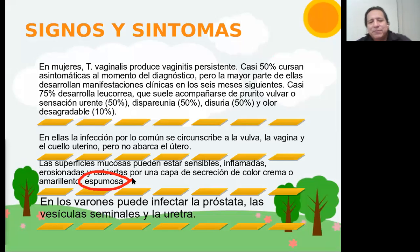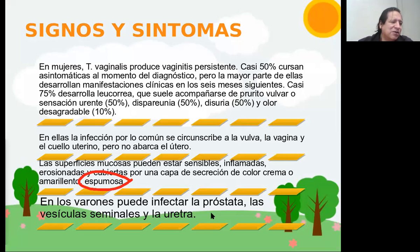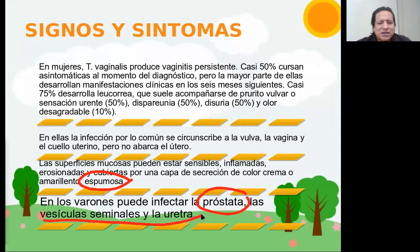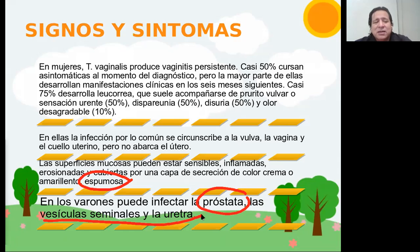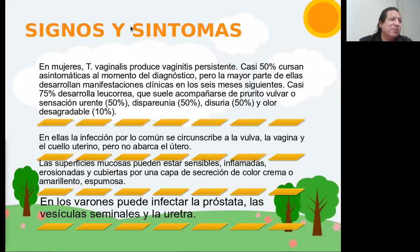Ahora, en cuanto al hombre, la mayoría es asintomática — ni están enterados de que tienen el parásito. En algunos, se pudiera ubicar en la próstata, vesículas seminales y uretra. En esos casos, puede tener sintomatología muy inespecífica, como ardor, dolor al orinar, generalmente leve. Suele ser muy suave y durar poco tiempo, de tal manera que puede que el paciente, a pesar de tener sintomatología, como es leve, no acuda al médico para el diagnóstico.